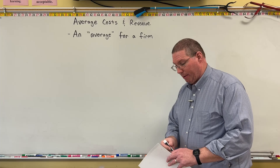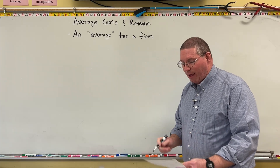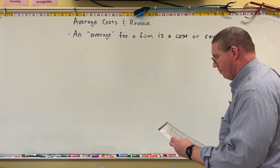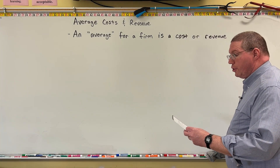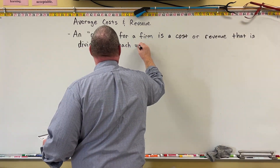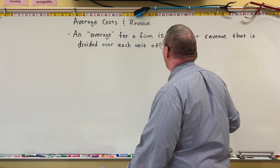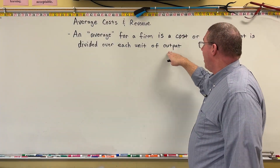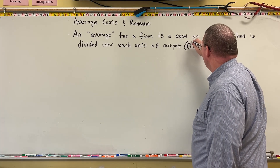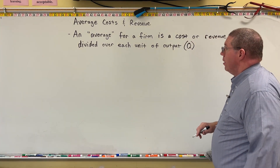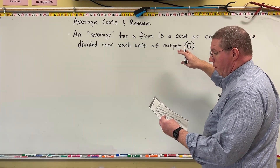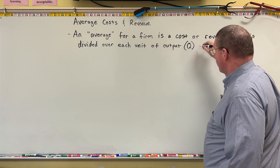An average for a firm is a cost or revenue that is divided over each unit of output. When we say each unit of output, we're talking about quantity — discrete units that are produced and sold.